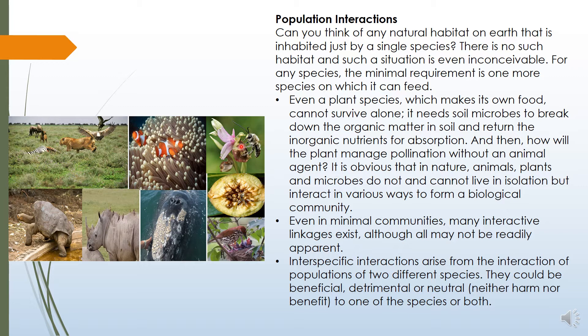So plants also depend upon other organisms. The plants are taking nutrients from the soil — it is the microbes which are responsible for converting or decomposing the dead organisms, and microorganisms help in providing the nutrients to the plants. Animals are directly or indirectly dependent upon plants and other animals. Herbivores are dependent upon the producers, upon the plants, while herbivores are eaten up by the carnivores. Each organism is interdependent upon one another.